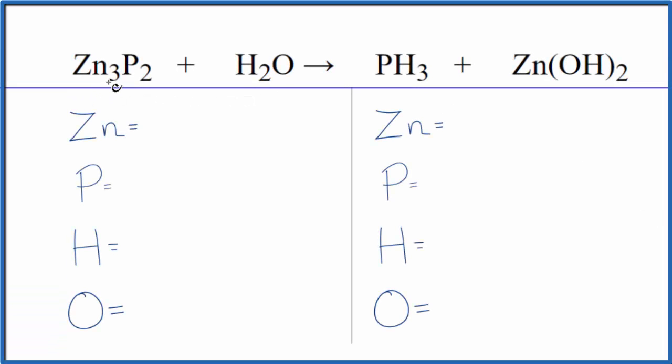To balance this equation, Zn3P2 plus H2O, this is zinc phosphide plus water.